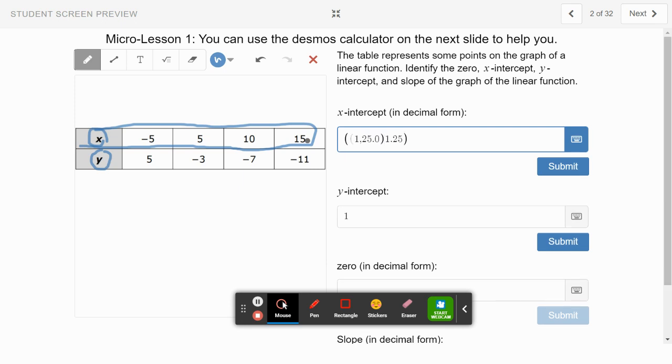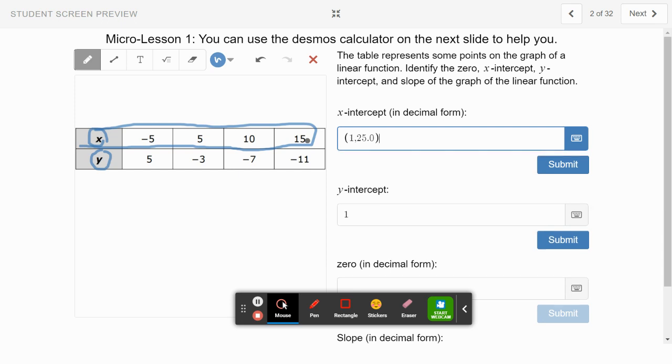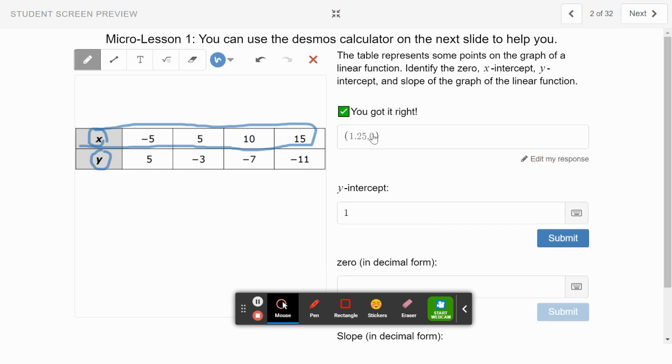Let's put it in as a point: 1.25 comma 0. Close it, delete all that extra stuff. We have to do it as 1.25, then a comma, then zero. Let's submit that and see what happens. Great! You have to put in your x-intercept as a point.